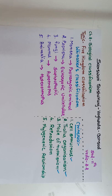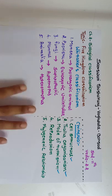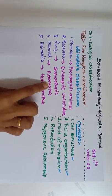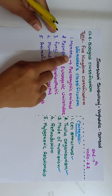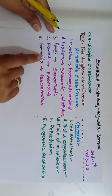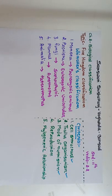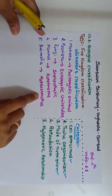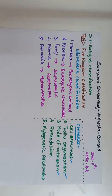Now we will show the classification from lower to higher, and study Whittaker's five kingdom classification in detail. In five kingdom classification, Monera is the most primitive kingdom and Plantae and Animalia are the higher kingdoms. So we classify from lower to higher, discussing Monera to Animalia.